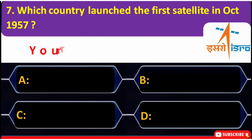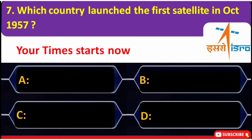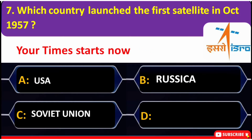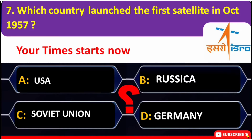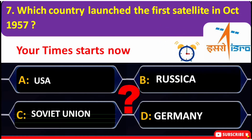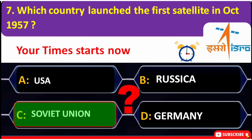Which country launched the first satellite in October 1957? A. USA, B. Russia, C. Soviet Union, D. Germany. The correct answer is C — Soviet Union.